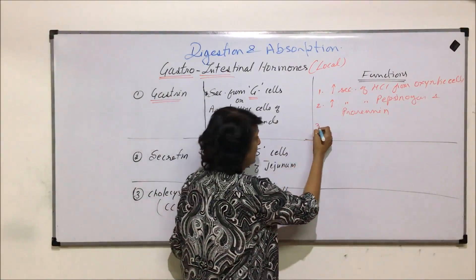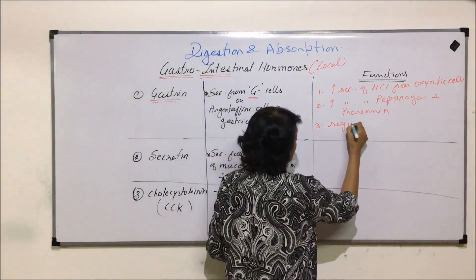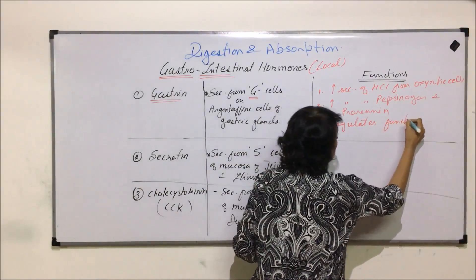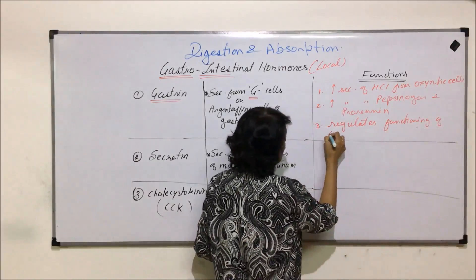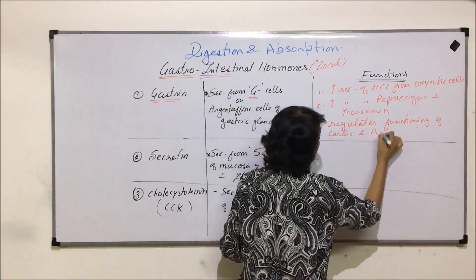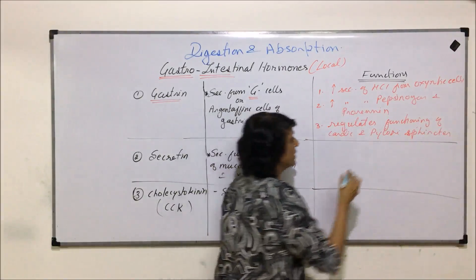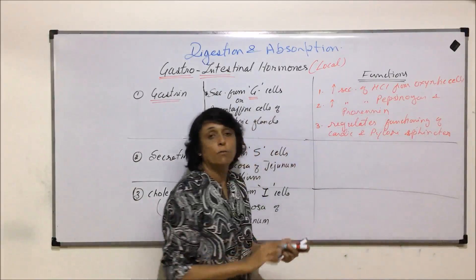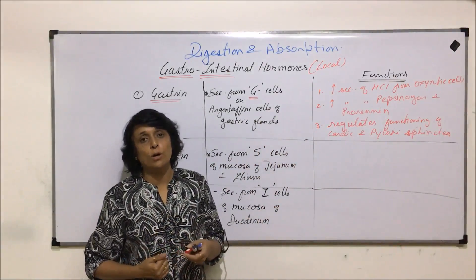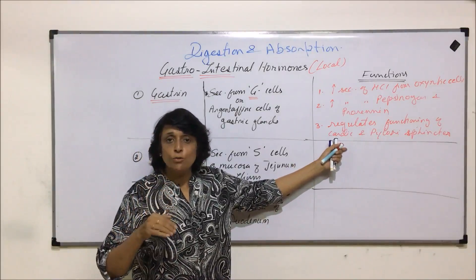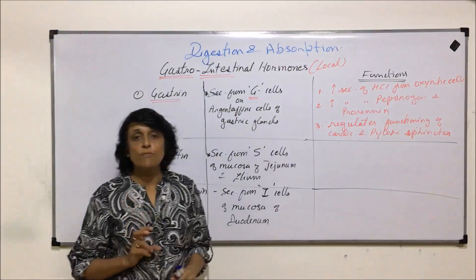A third function of gastrin is that it regulates the functioning of the cardiac and pyloric sphincters. The cardiac sphincter controls the movement of food from the esophagus into the stomach, and the pyloric sphincter controls movement from the stomach into the duodenum. So the movement of these sphincters is also controlled by the gastrin hormone.